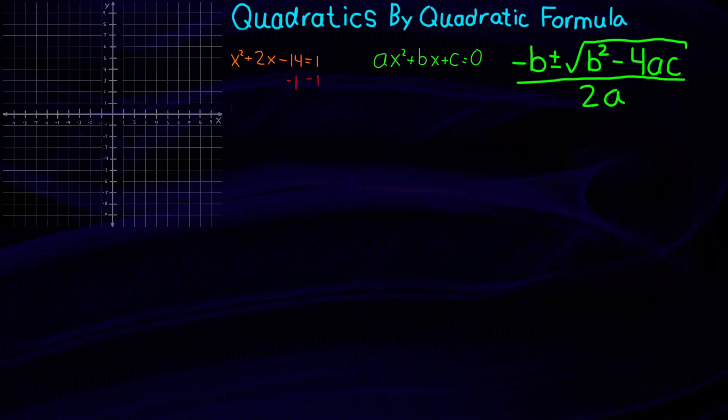So now what we're left with is x squared plus 2x minus 15. Negative 14 minus 1 that becomes negative 15 and this equals 0. And now this is in standard form.